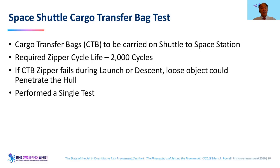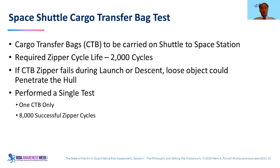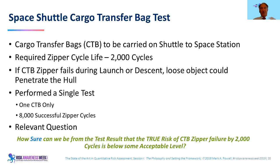They performed a simple test: took one cargo transfer bag and zipped it open and shut 8,000 times — it succeeded without failing. That's all they had. They still did not know how risky it was. They weren't going to use any bag to 8,000 cycles; a few were up in the thousands, but they weren't running several hundred flights. The relevant question: how sure can you be, from that one censored test result, that the true risk of zipper failure by 2,000 cycles is below some acceptable level?